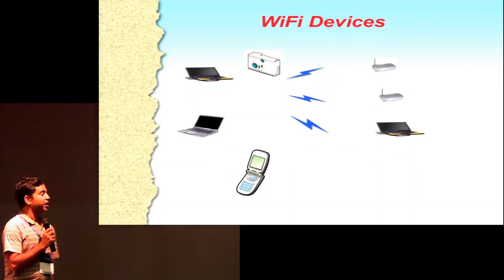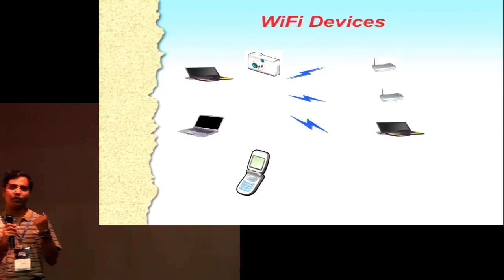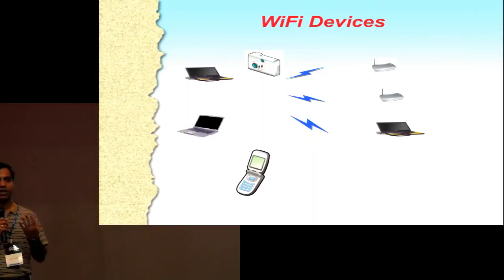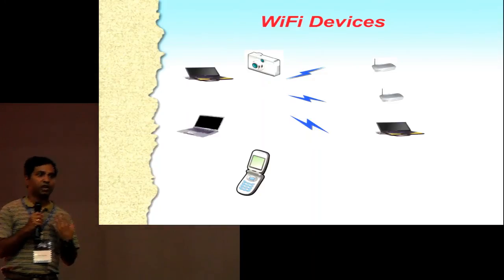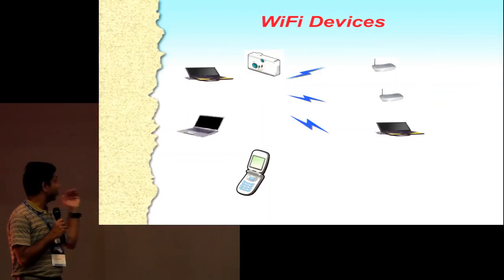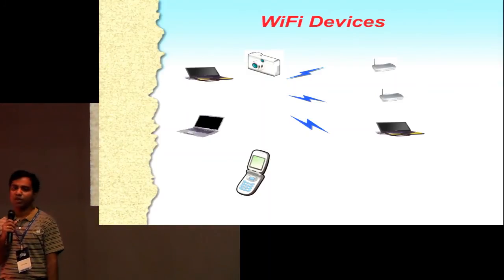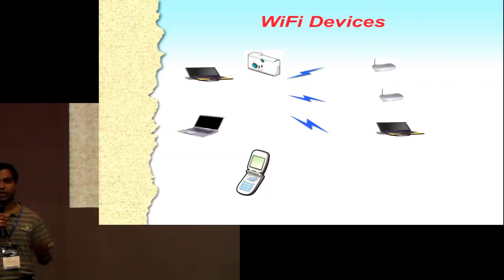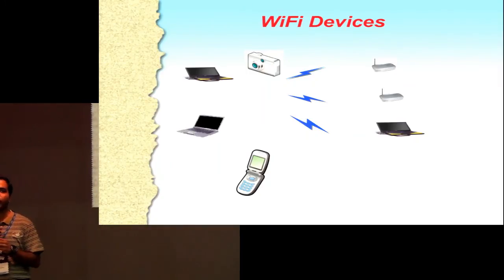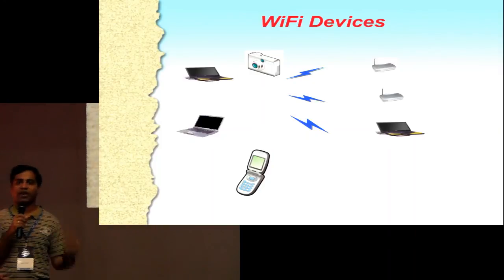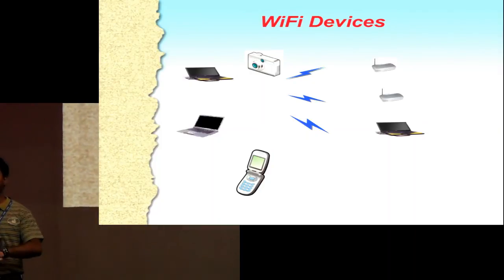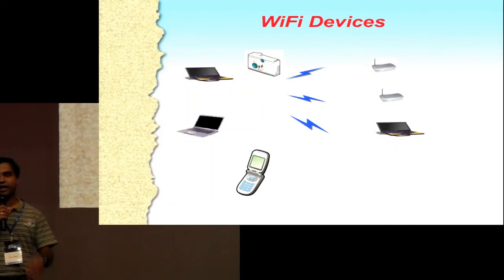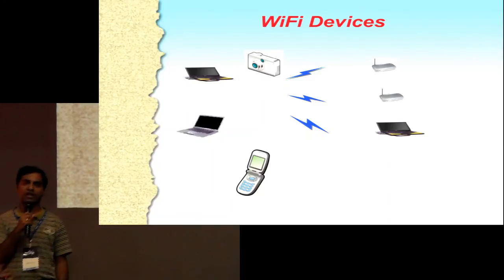These are some of the Wi-Fi devices. Nowadays every device has Wi-Fi — the majority being laptops, mobile phones, printers, cell phones, and access points. Access points are devices which receive Wi-Fi data. We'll look into details about how Wi-Fi gets connected, how Wi-Fi works at the chip level or at a Linux software level, and all those internals. That's the main agenda of my talk.